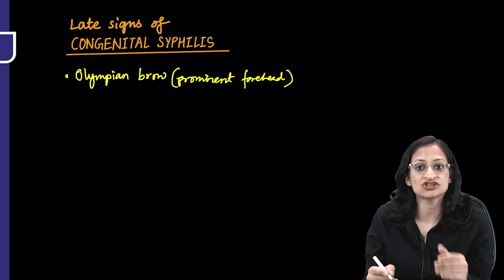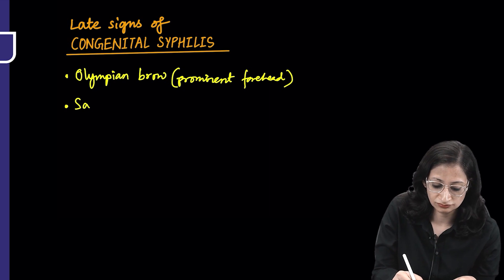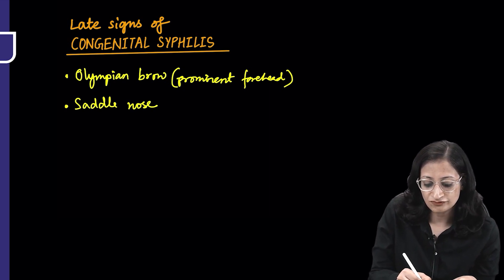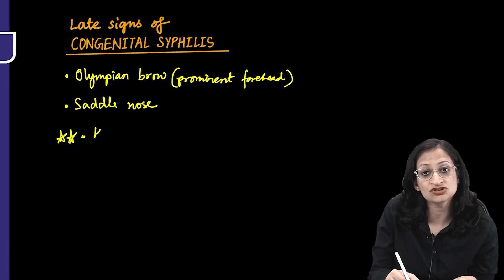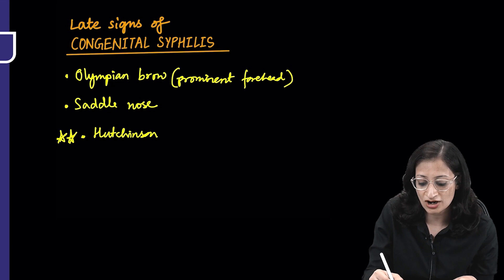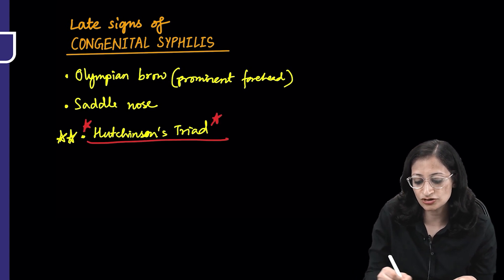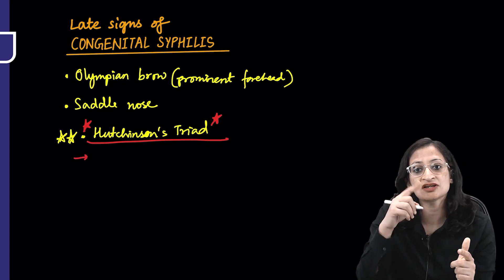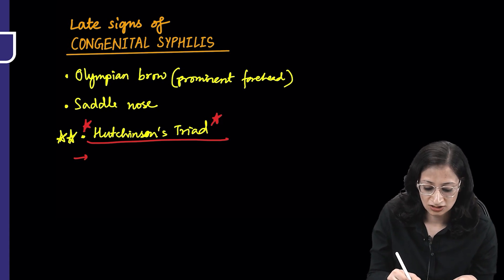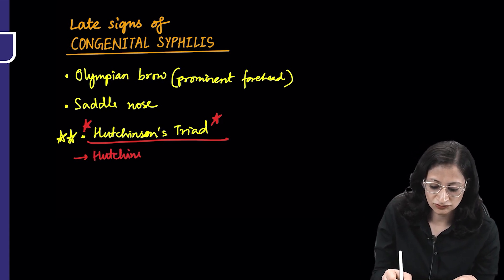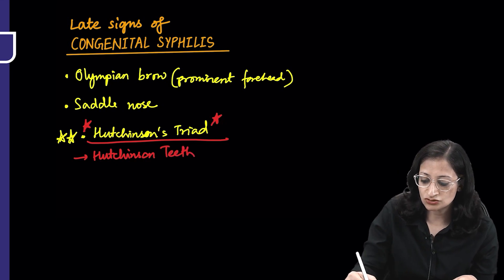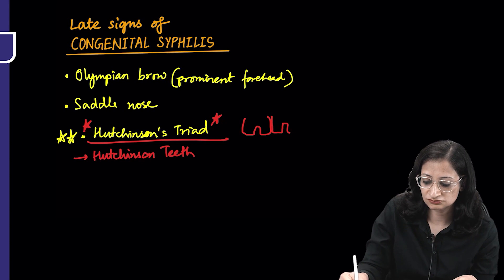The nose can be saddle-shaped, saddle nose. Then very important, asked numerous times, is Hutchinson's triad. The name itself tells you there are three components. The components of Hutchinson's triad are Hutchinson's teeth, which are peg-shaped or notched incisors.